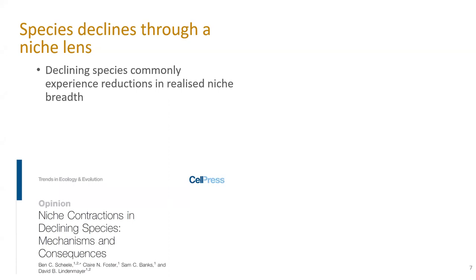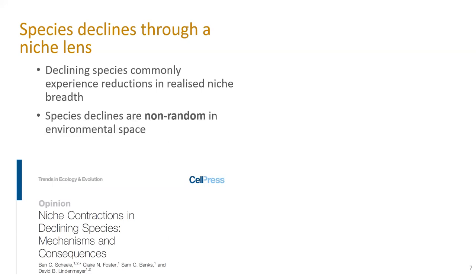This started a few years ago when we published a paper arguing that when species are declining, they're coincidentally experiencing reductions in their realized niche breadth—the range of different environmental conditions across which the species is found. That's obvious and not that informative. But where it gets interesting is that these declines across environmental gradients are generally going to be non-random. There may be predictable patterns depending on the species characteristics, its distribution, and how the threat operates.